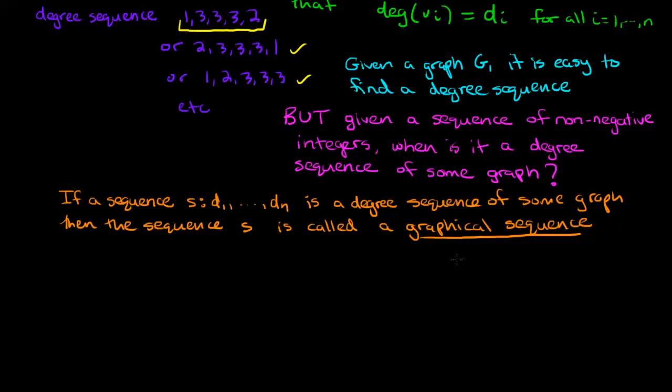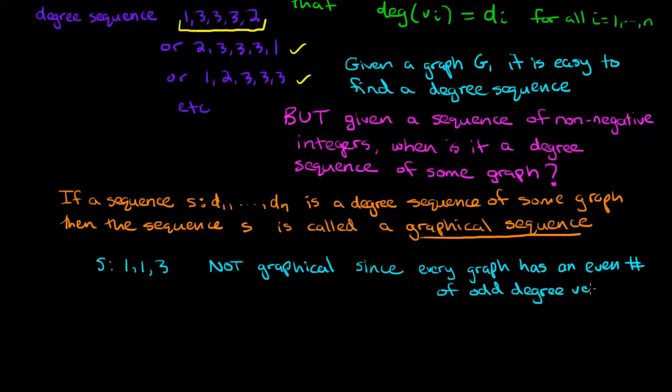Obviously not every sequence of non-negative integers can be a graphical sequence. For example the sequence 1, 1, 3 is not graphical because we have three odd degree vertices here and we know that every graph has an even number of odd degree vertices. We've seen this fact in a previous video. Another example of something that's not graphical is the sequence 3, 3. It's not graphical because it only has two vertices and so in that graph the maximum degree is 1.